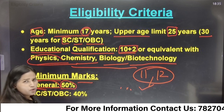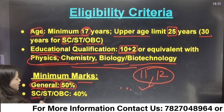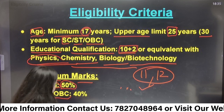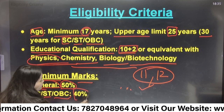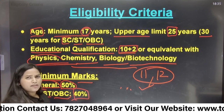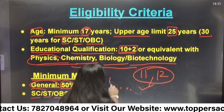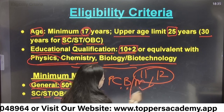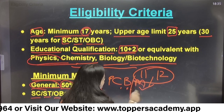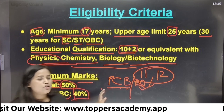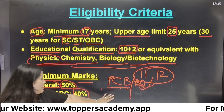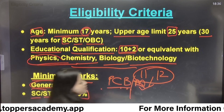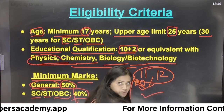Category-wise, we look at the marks. For SC, ST, OBC, and other reserved categories, if you have 40% marks in 12th in Physics, Chemistry, and Biology, you are also eligible for this test.